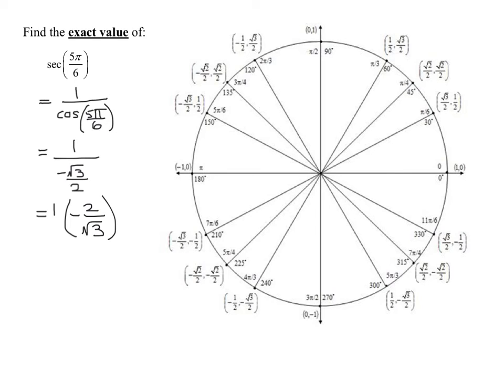So my answer is negative 2 over the square root of 3. That is the secant of 5π over 6.